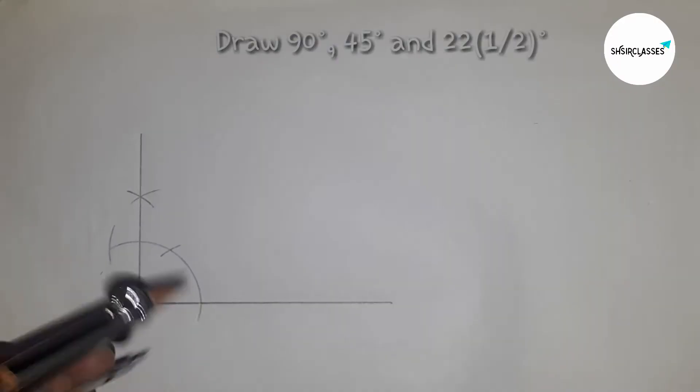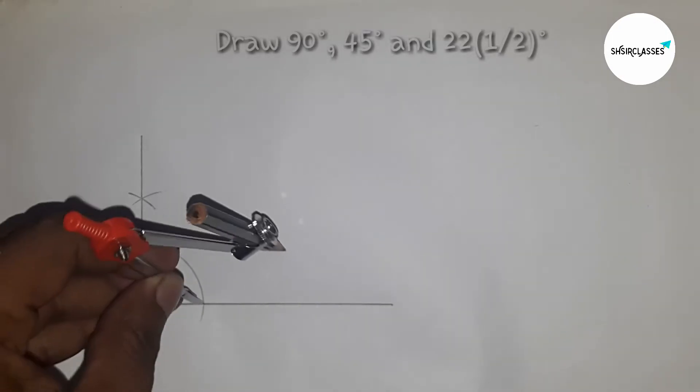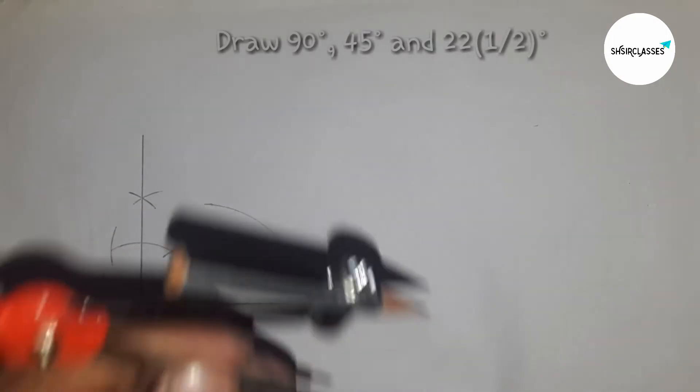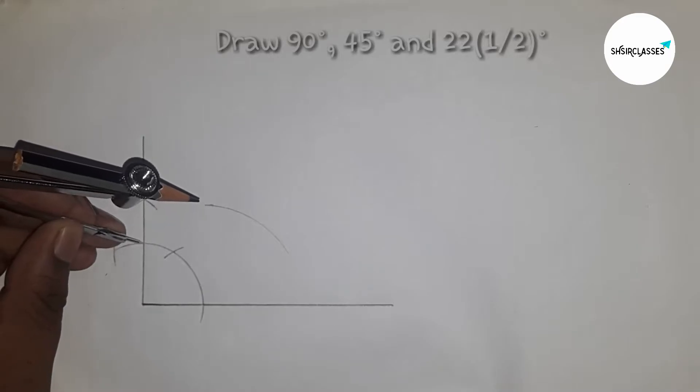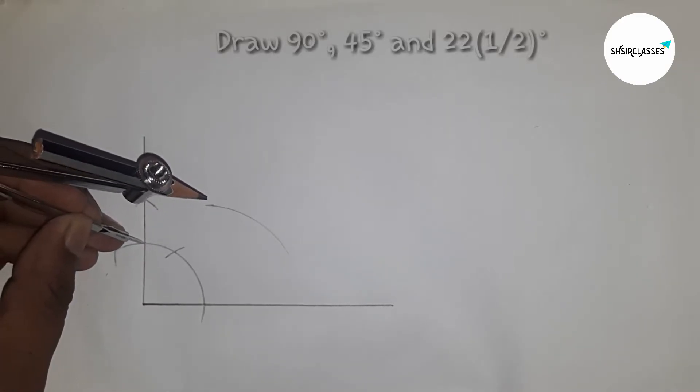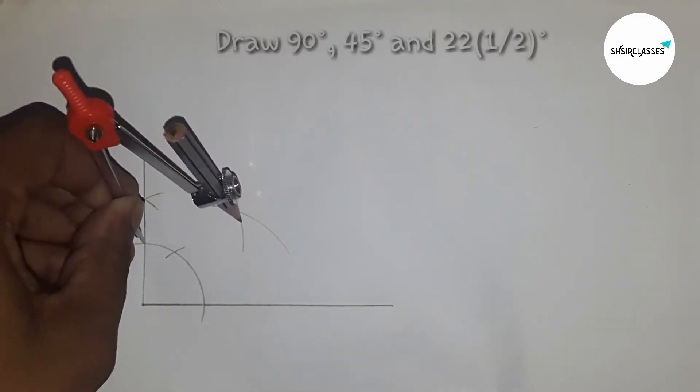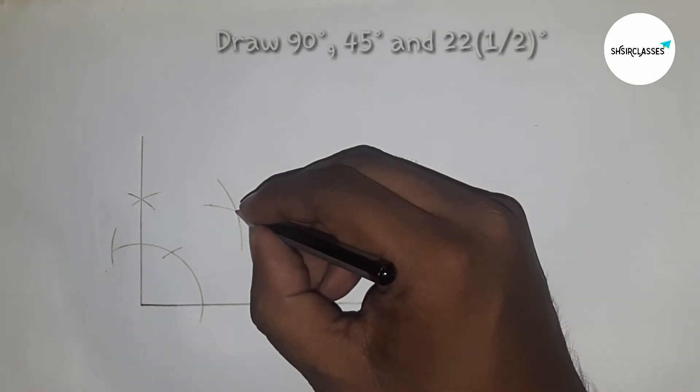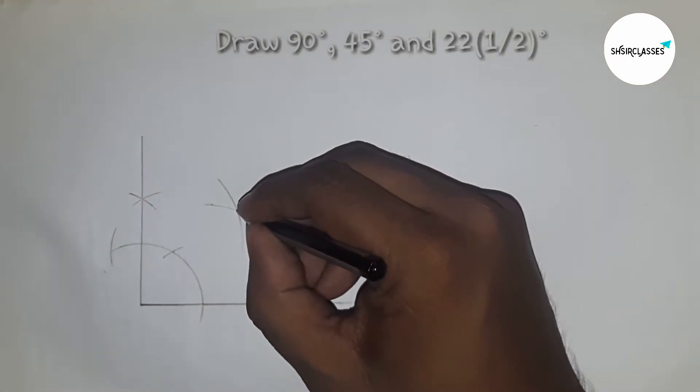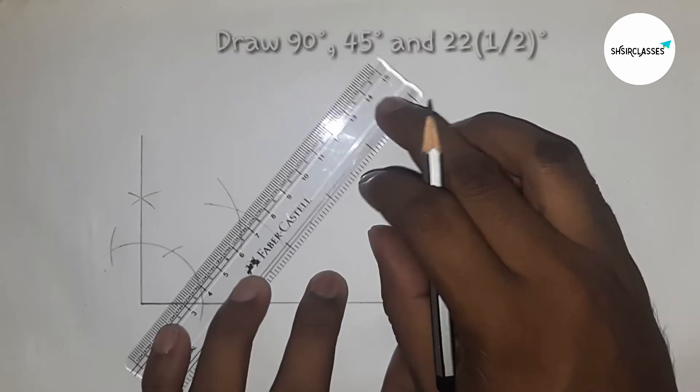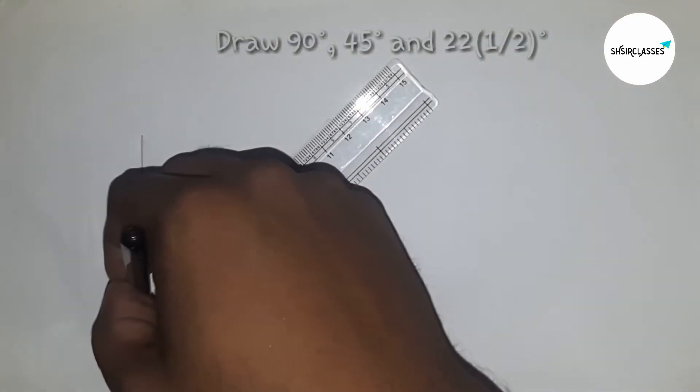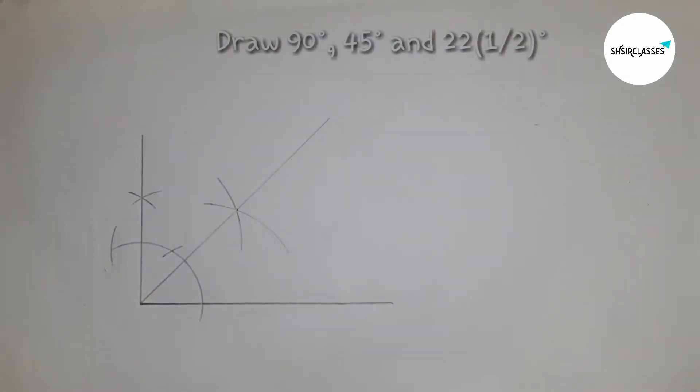Now I'm going to draw 45 degrees by bisecting the 90 degree angle. Taking approximately 4 centimeters radius and drawing curves, putting here and drawing curves here. Now I'm going to join these two points and getting a 45 degree angle.